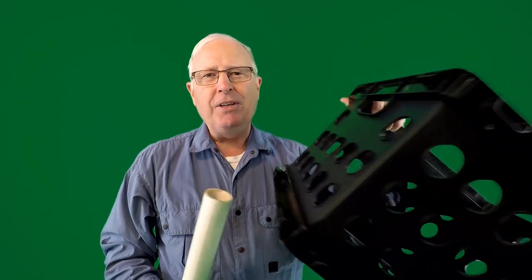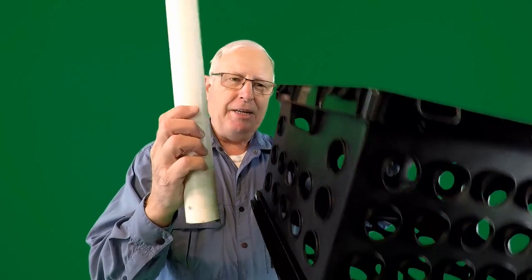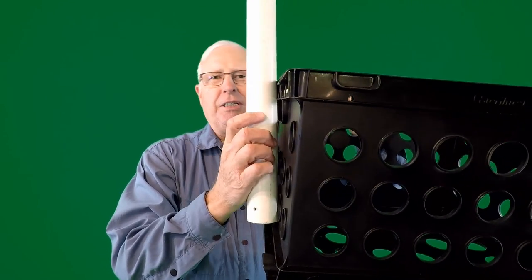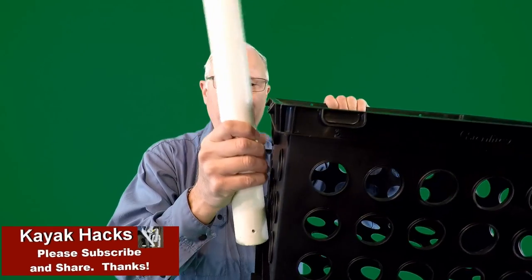Generic piece of PVC, Walmart milk crate. Got this from the office supply section and here's the big problem. Check this out. If you put this flush next to the milk crate, it's going to cock out to the right.